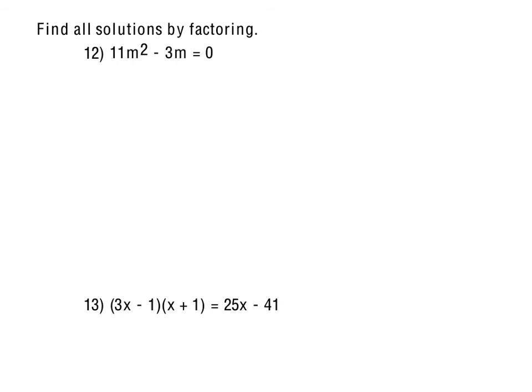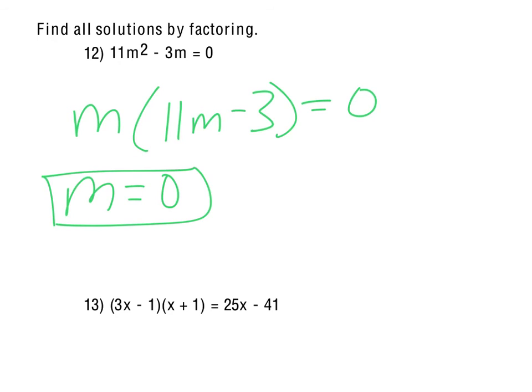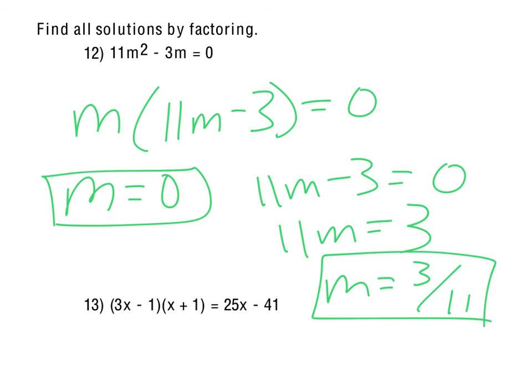Alright. So for the rest of this, we're going to be solving using our factoring methods so that we can then use our zero product property. For number 12 here, all we can do is factor out an m. So that gives us 11m minus 3. So again, our zero product property says, the only way for that product to be zero is if either one of the factors is zero. So either m equals zero, which is really a solution, or 11m minus 3 equals zero, which would be 11m equals 3 if we add the 3 and m equals 3 elevenths when we divide by 11. So there's the two solutions, zero and 3 elevenths.